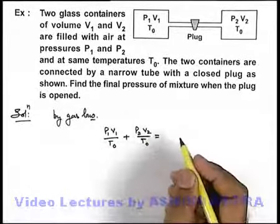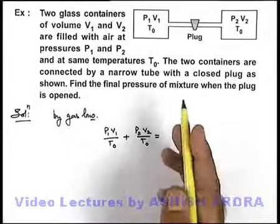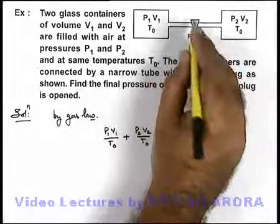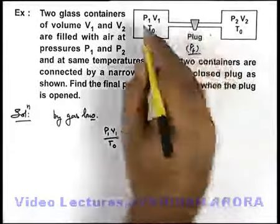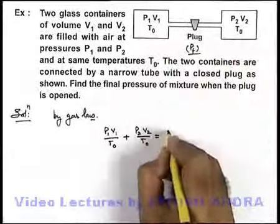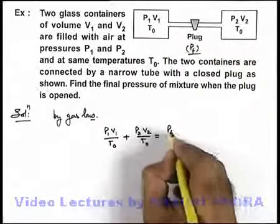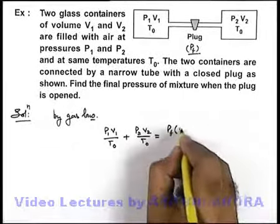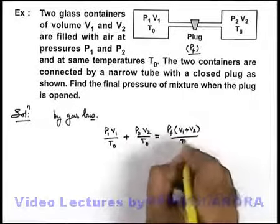After mixing, the final pressure becomes Pf. When the plug is opened, the pressure changes to Pf because it becomes a single container of volume V1 plus V2. So the final number of moles in the gas will be Pf multiplied by V1 plus V2, by T naught.